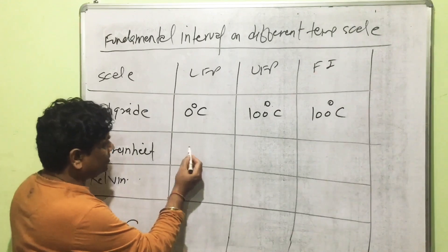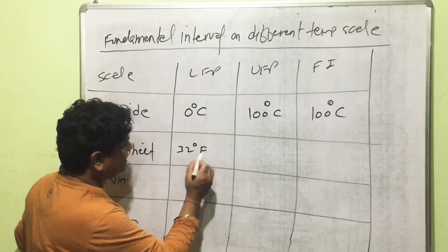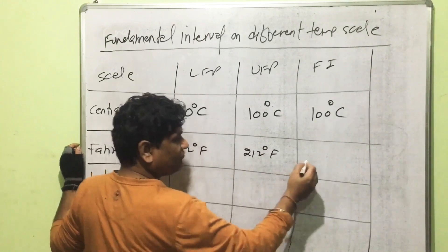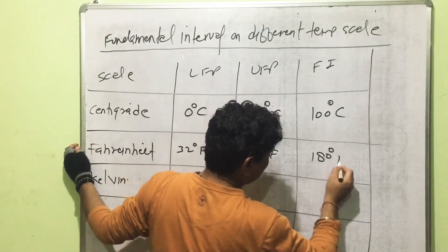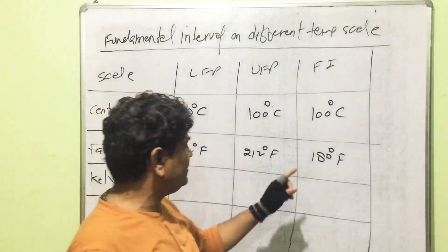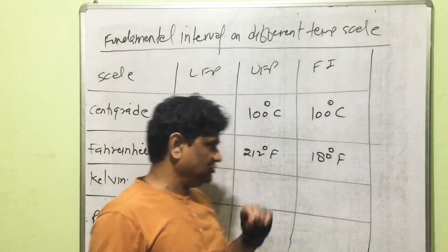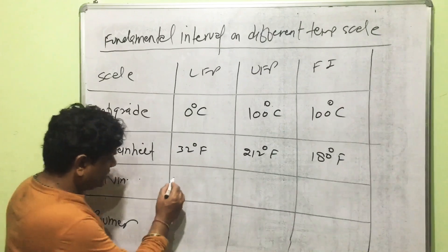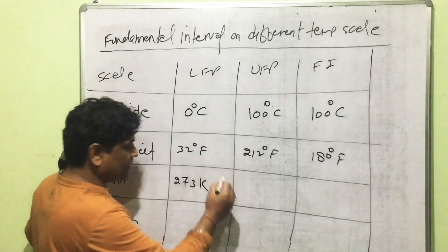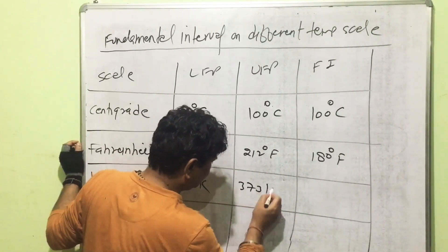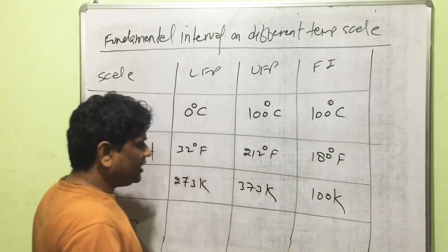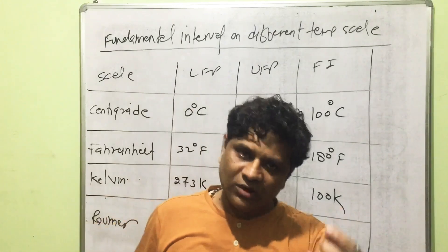For the Fahrenheit scale: lower fixed point is 32°F, upper fixed point is 212°F, fundamental interval is 180°F, and the total number of divisions is also 180. For the Kelvin scale: lower fixed point is 273 K, upper fixed point is 373 K, and the fundamental interval is 100 K, with total number of divisions also 100.